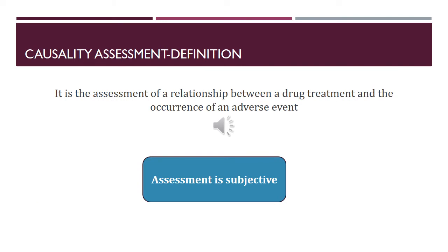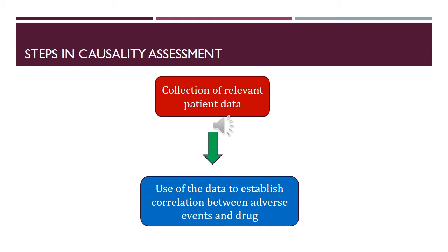Causality assessment is basically assessment of a relationship between drug treatment and the occurrence of an adverse event. That means it is a method by which you can attribute an adverse event to a particular drug with evidence. This method of assessment is subjective, which means the inference is drawn largely based on a clinician's judgment of the cause-effect relationship. There are two important steps: first, collection of relevant patient data, and second, use of methods to establish a correlation between adverse events and drugs.